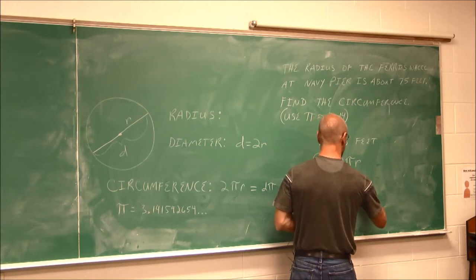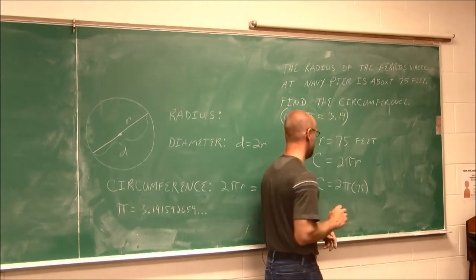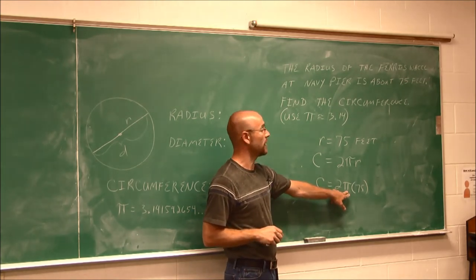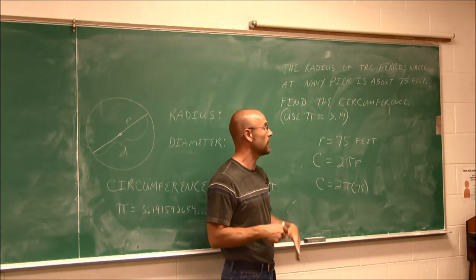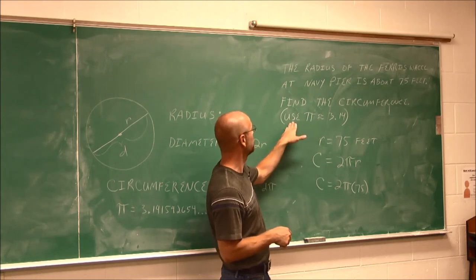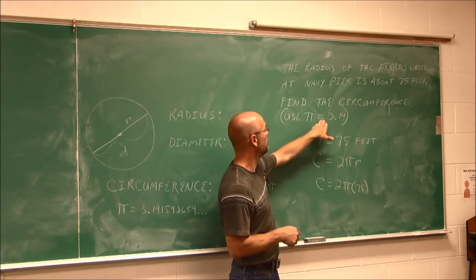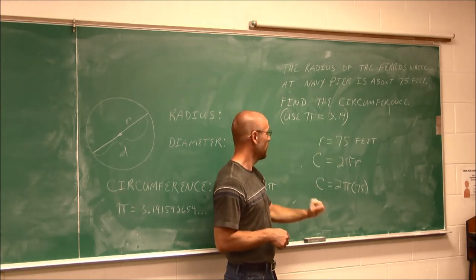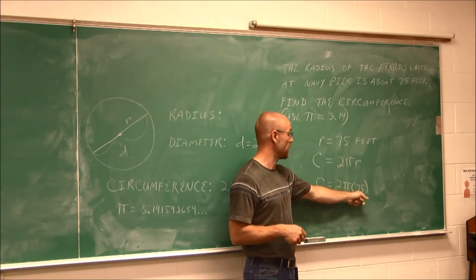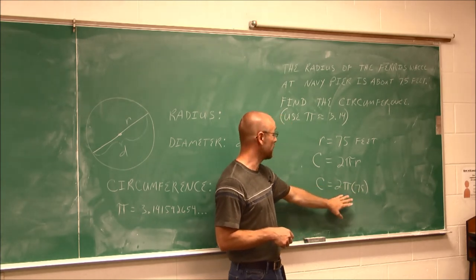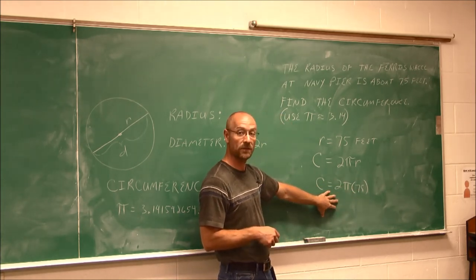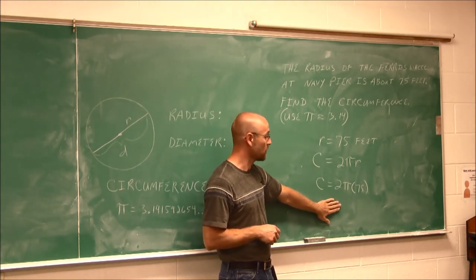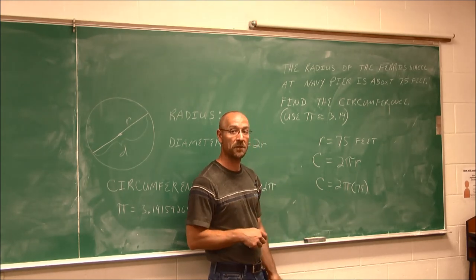2π times 75. Now, because pi is that irrational number, we have to round it at some point. And it tells us here to use pi approximated to 2 decimals, 3.14. So 2 times 3.14 times 75. I'm going to allow you to work on that math yourself. It's good practice for the examples we looked at. So go ahead and try that. And thank you for watching.